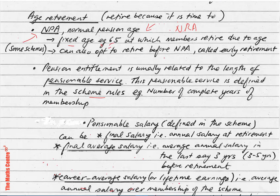For example, age 65, at which members retire due to age. In some schemes, you can also opt to retire before the normal pension age — this is called early retirement. They may offer you retirement between ages 60 and 65. So NPA is a fixed age stated in the scheme at which a member will retire due to age.